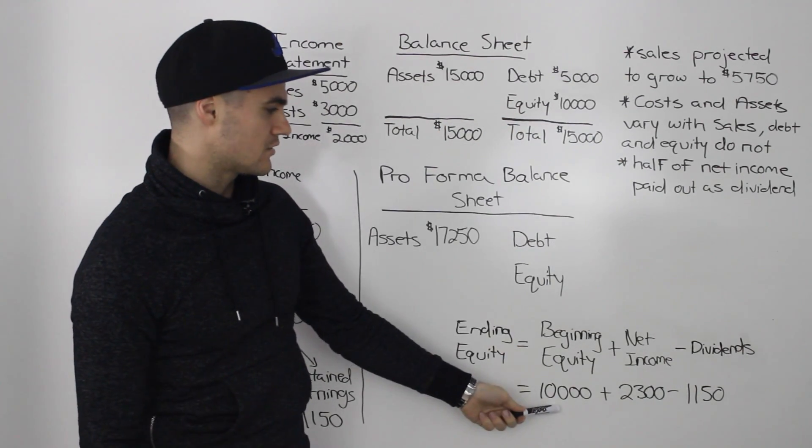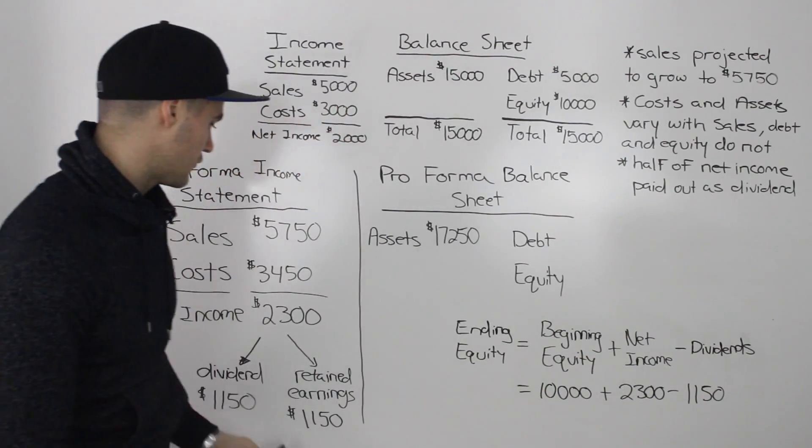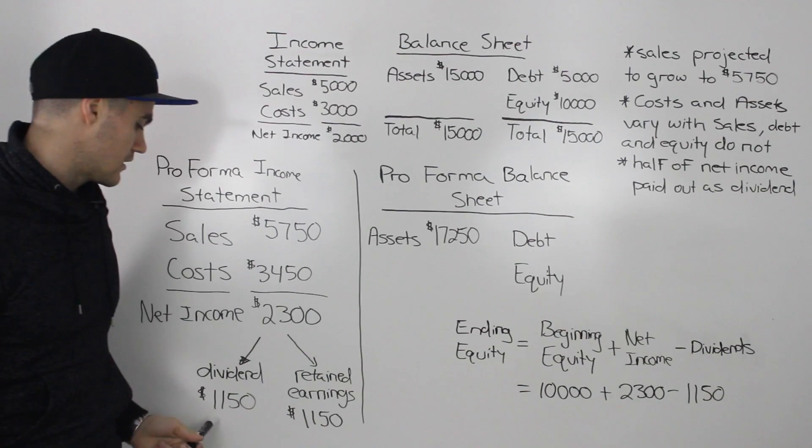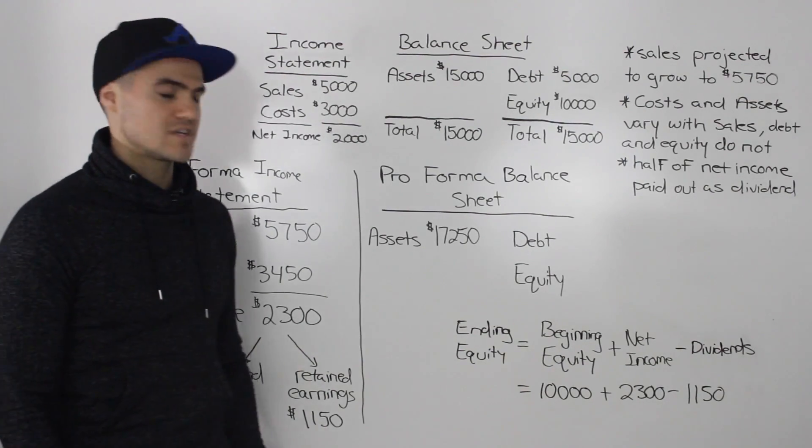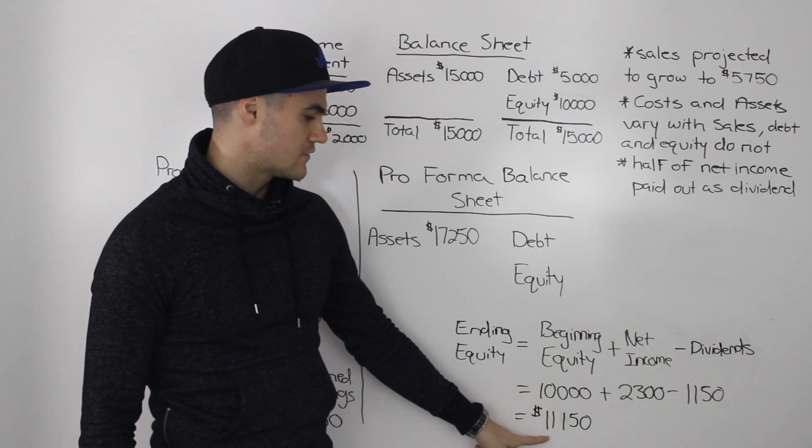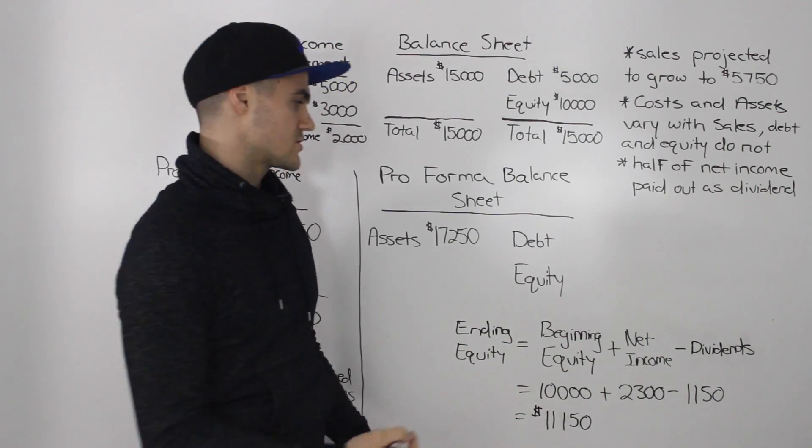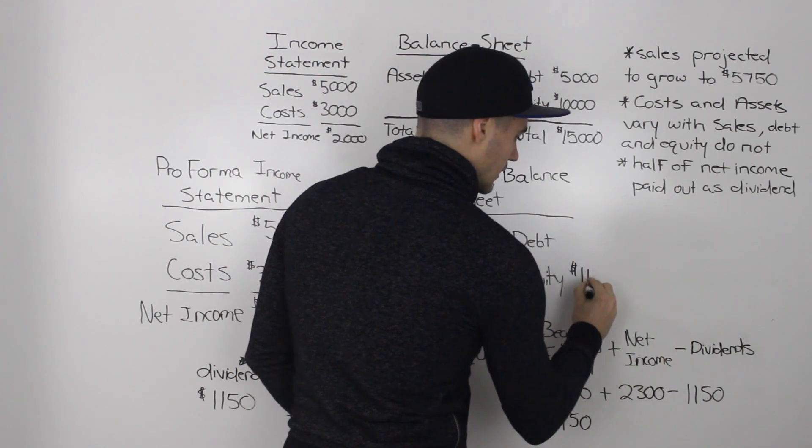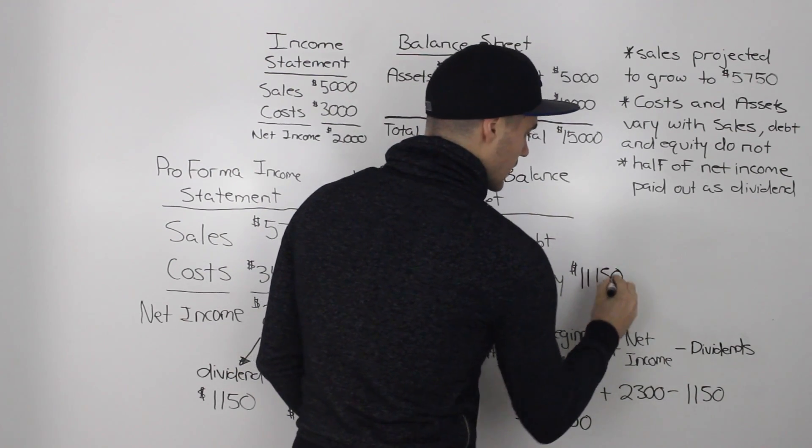So the $10,000 there plus the net income, the forecasted net income of $2,300 minus the dividend of $1,150. So then the ending equity figure, if you net all those numbers out, would be $11,150. So that would go in the pro forma balance sheet, $11,150.